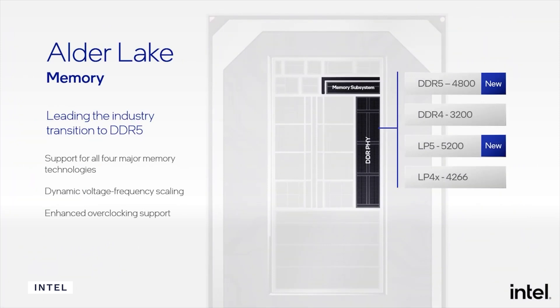Intel's upcoming 12th generation Alder Lake CPUs will be supporting DDR5 RAM. MSI and ASUS are already testing motherboards with DDR5 support, so we might see these at the beginning of next year. AMD will also support DDR5 potentially with its Zen 4 platform. Just be aware that DDR5 RAM will cost more initially, like any new technology, though prices should come down over time.